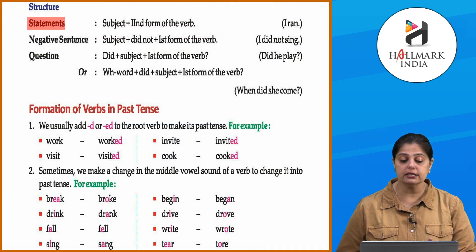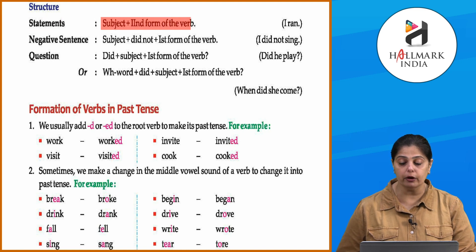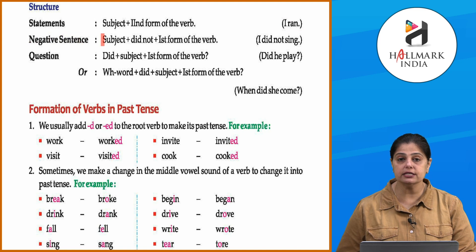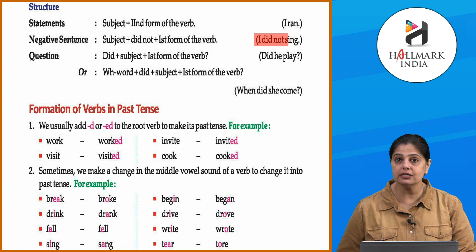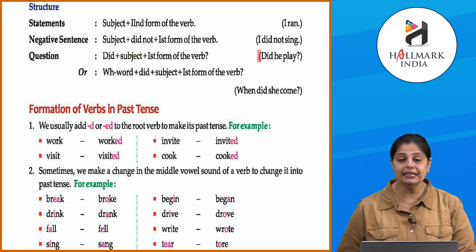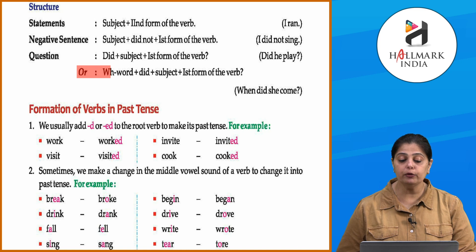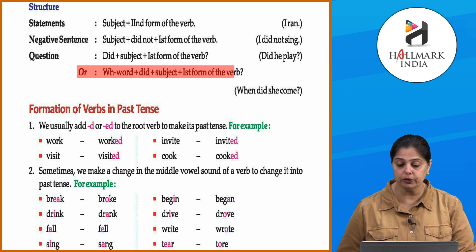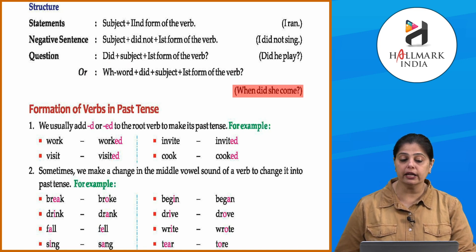So the simple past tense expresses an action that was completed in the past at a definite point of time. The structure for statements is: subject plus second form of the verb — for example, 'I ran.' For negative sentences: subject plus 'did not' plus first form of the verb — 'I did not sing.' For questions: 'did' plus subject plus first form of the verb — 'Did he play?'